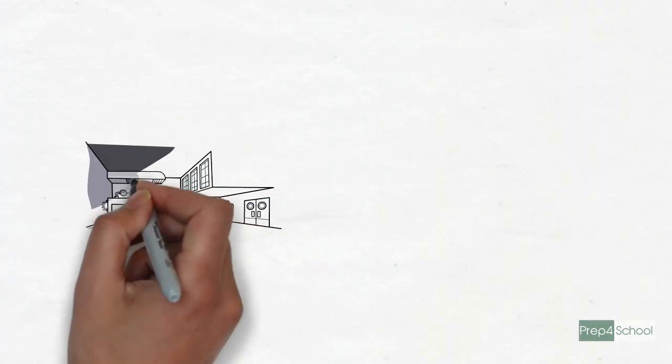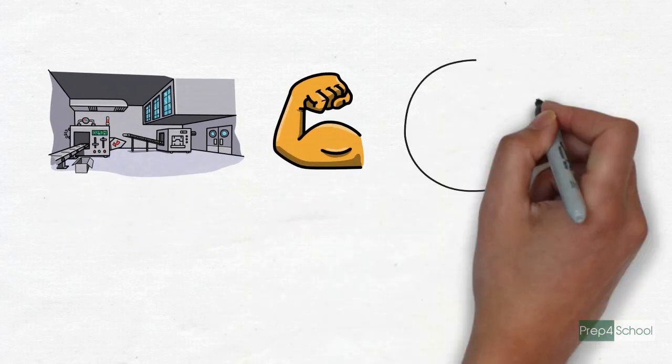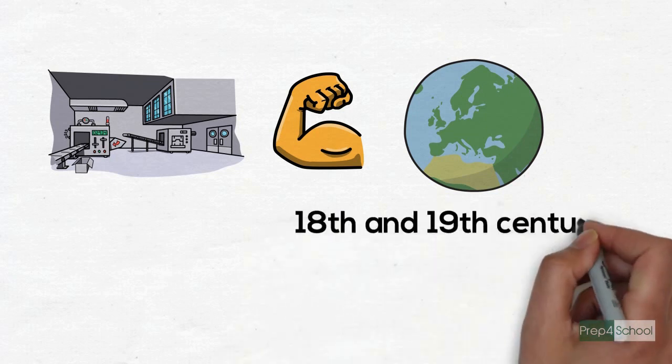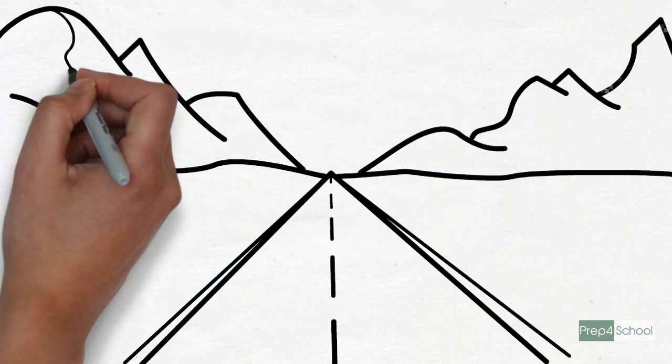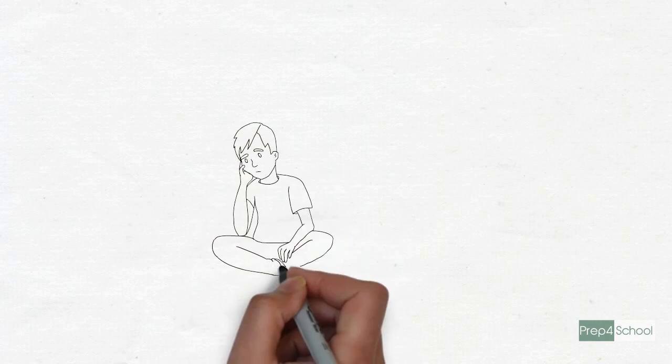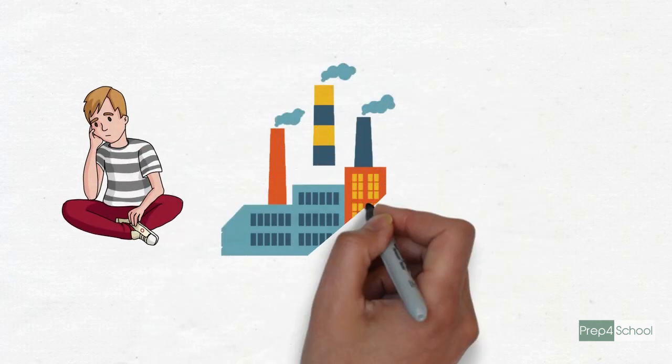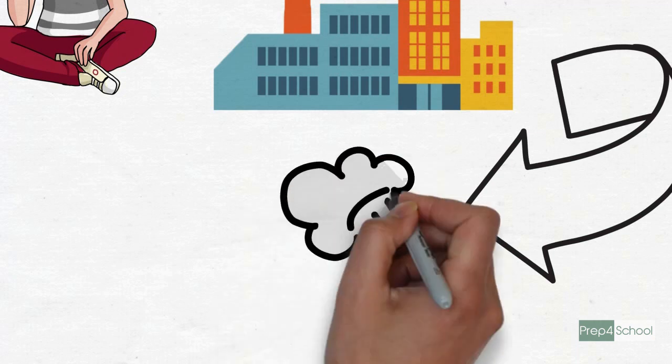The steam engine was the major power source of the industrial revolution in Europe in the 18th and 19th centuries. It dominated industry and transportation for 150 years. It is common knowledge that modern civilization was forged in the factories of the industrial revolution, and those factories themselves were powered by the steam engine.